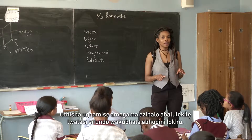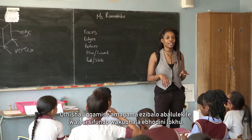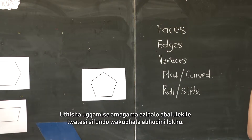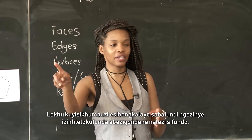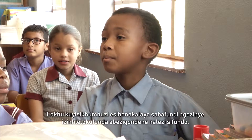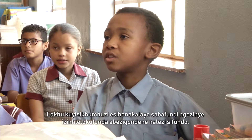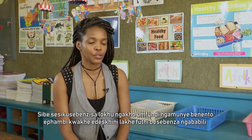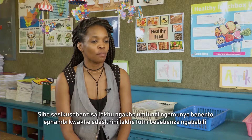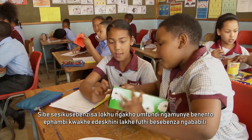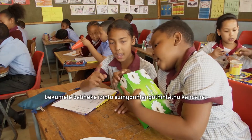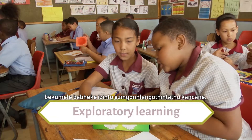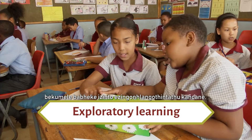The teacher highlighted key mathematical vocabulary for this lesson and wrote it on the board. This is a visual reminder for the learners of the concepts they learnt in this lesson. Then they put it into practice — each learner had an object in front of them on their tables, and in pairs they had to explore the 3D object.